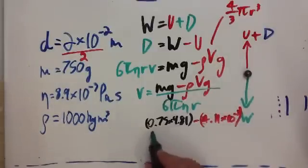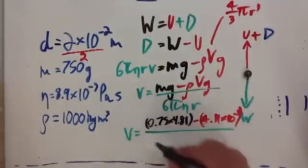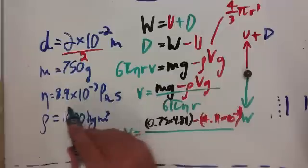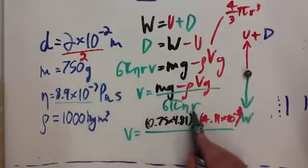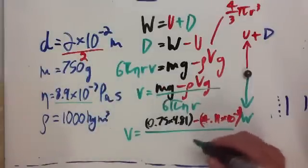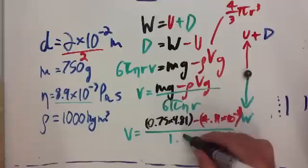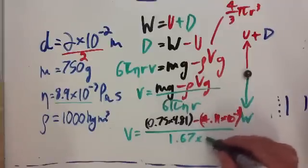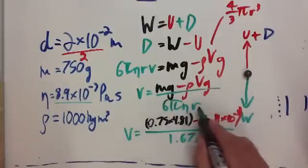Now, for the bottom line, we're still working out V, remember. We've got 6 times pi, times eta, which is here, times radius of the ball again, which is 1 times 10 to the minus 2. Total all that up, that gives us 1.67 times 10 to the minus 3 on the bottom.